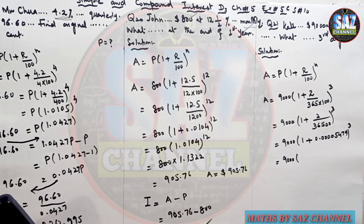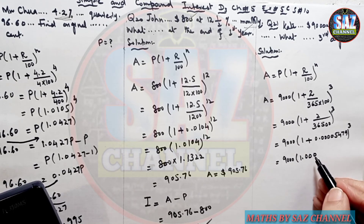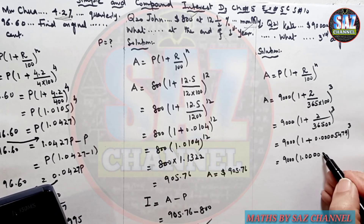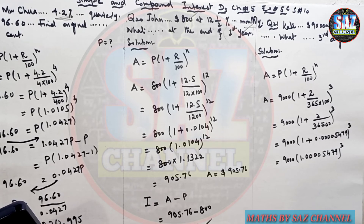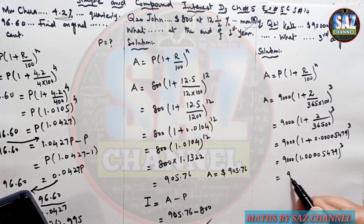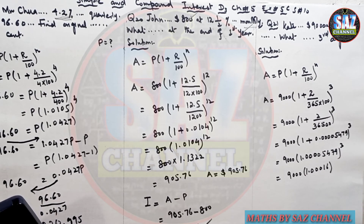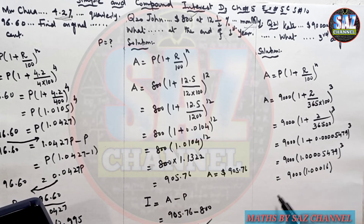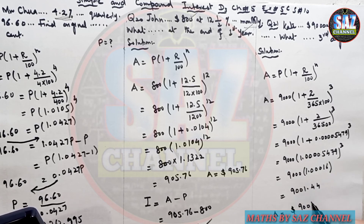Adding 1: we get 1.00005479. Raising to the power of 3 gives approximately 1.00016. Multiplying: 9000 × 1.00016 ≈ 9001.44. So the amount at the end of the third day is approximately 9001.44.